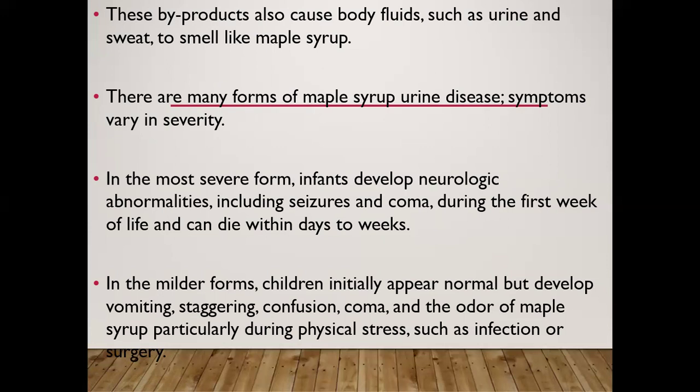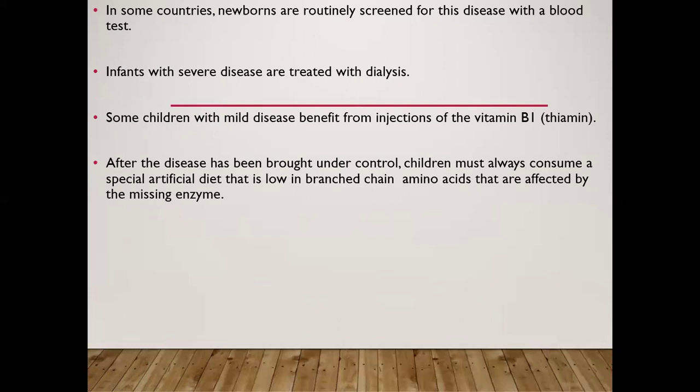There are many forms of this disease varying in severity. In the most severe form, the infant develops neurologic abnormalities including seizures and coma during the first week of life and may die within days to weeks. In milder forms, children initially appear normal but develop vomiting, staggering, confusion, coma, and maple syrup odor during physical stress such as infection. Infants with severe disease are treated with dialysis; some benefit from vitamin B1 injections. Children must consume a special diet low in the affected branched-chain amino acids.